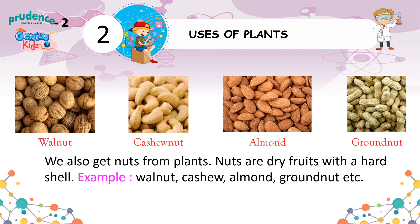We also get nuts from plants. Nuts are dry fruits with a hard shell. Examples include walnut, cashew, almond, and groundnut, etc.